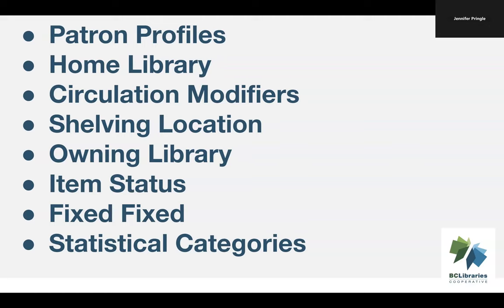Fixed fields are a big one that affect patron searching. If the coded data in the fixed fields of MARC records — the leader, the 007, the 006, and 008 — isn't correct, items don't appear in filtered search results. We're not going to look further at fixed fields today, but we do have a recording on the YouTube channel for Sitka's continuing training webinar, Those Flummoxing Fixed Fields, which goes into that in depth.